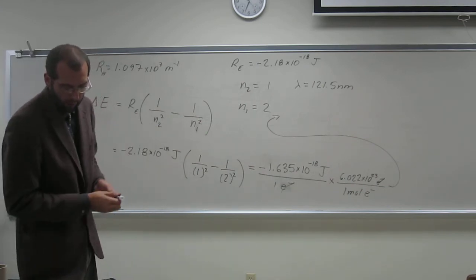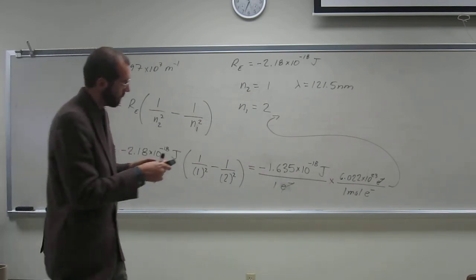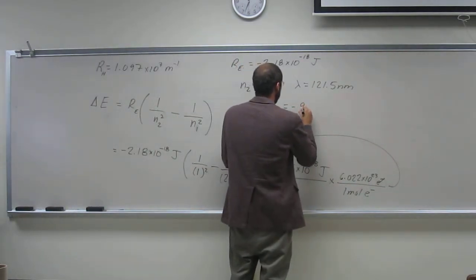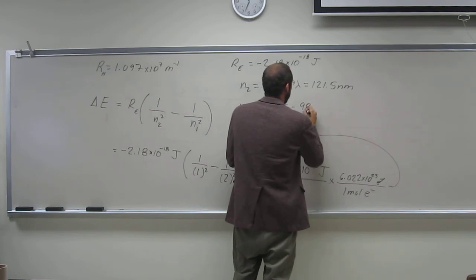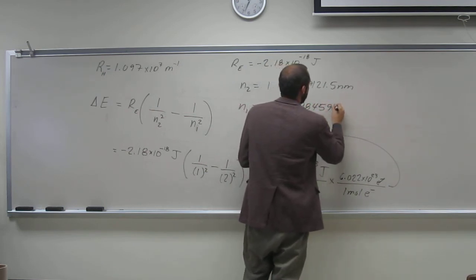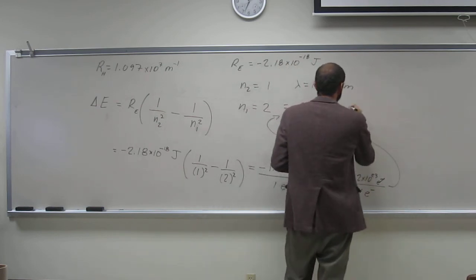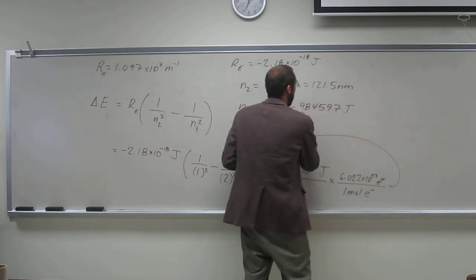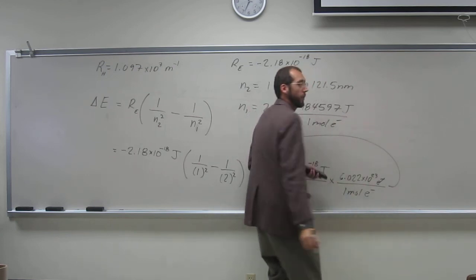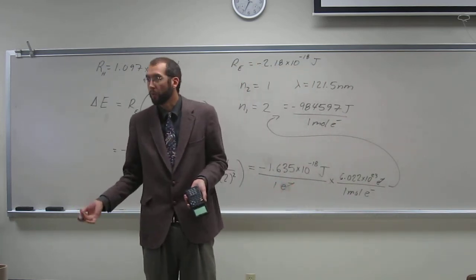And when you do that, you get this answer, negative 9.8457 or whatever, joules per one mole of electrons. But it asks for kilojoules per mole.